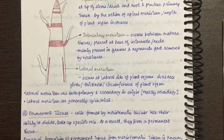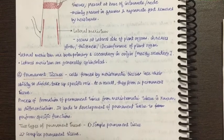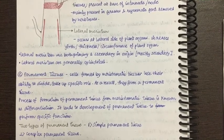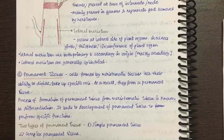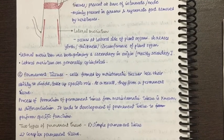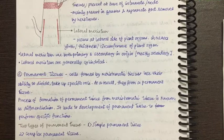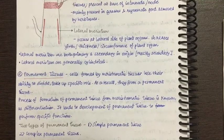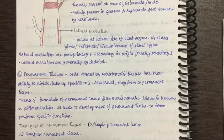Now we have studied meristematic tissue. There are two types: meristematic and permanent. When meristematic cells lose their capacity to divide — their ability to divide — they acquire a specific role, and as a result they transform into permanent tissue. This process of formation of permanent tissue from meristematic tissue is known as differentiation. The meristematic tissue divides to produce new cells; those cells lose their ability to divide and acquire specific functions, becoming permanent tissue.